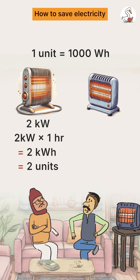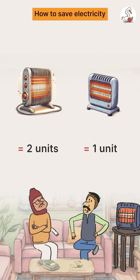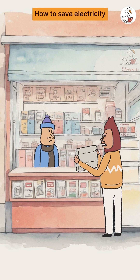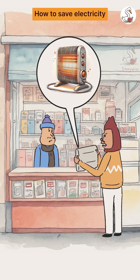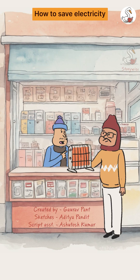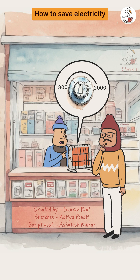On the other hand, Mr. Sharma's heater is 1,000 watts, so it consumes one unit of electricity in one hour. That means more the power, the higher the bill. A furious Mr. Gupta went back to the shopkeeper saying the heater had made his electricity bill shoot up. The shopkeeper replied, 'Mr. Gupta, it has this knob right here — you can change the power from 800 watts to 2,000 watts.'